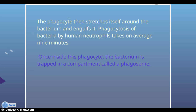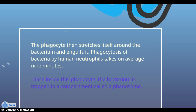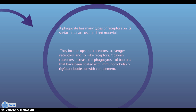Once inside the phagocyte, the bacterium is trapped in a compartment called the phagosome. A phagocyte has many types of receptors on its surface that are used to bind material. These include opsonin receptors, scavenger receptors, and toll-like receptors. Opsonin receptors increase the phagocytosis of bacteria that have been coated with immunoglobulin G.